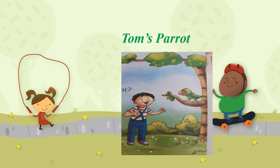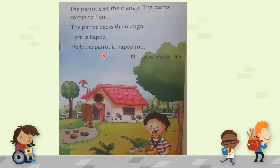Tom is a child and his pet is a parrot. In this story, Tom is looking at his pet. Open your books on page number 18. Last time we read the starting lines; today we will read the rest of the page.